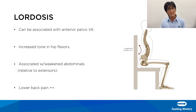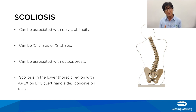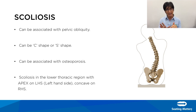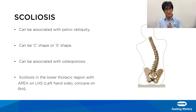Scoliosis is associated with pelvic obliquity, can be C-shaped or S-shaped, and is associated with osteoporosis. We need to establish whether it is fixed or correctable, and where support is needed. When placing someone with a scoliosis in a chair, lateral supports must be positioned carefully to give opposite and equal pressure. In cases of scoliosis, the phoenix chair is often used because it provides maximum lateral and head support for a midline position.